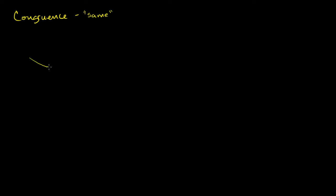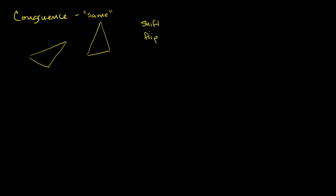To see a simple example, I have this triangle right over here, and let's say I have this triangle right over here. If you are able to shift this triangle, rotate this triangle, and flip this triangle, you can make it look exactly like this triangle, as long as you're not changing the lengths of any of the sides or the angles. So you can shift it, flip it, and rotate it.